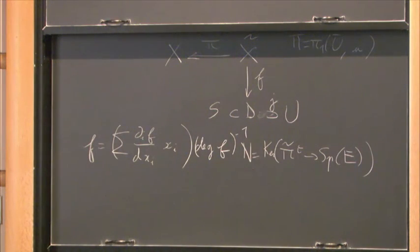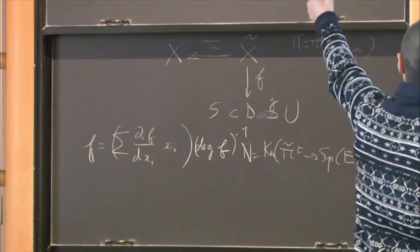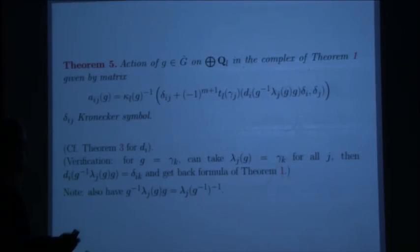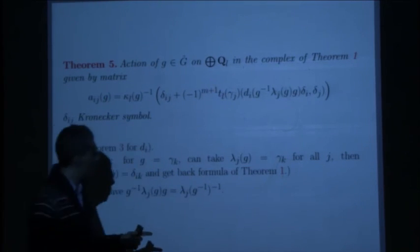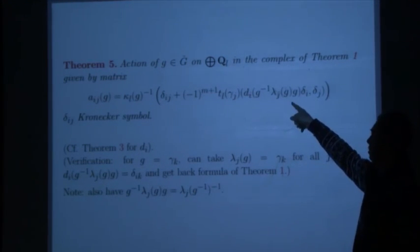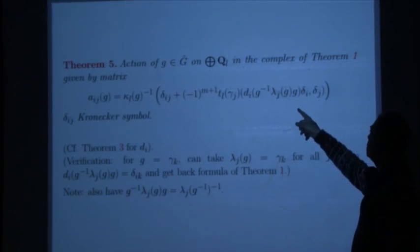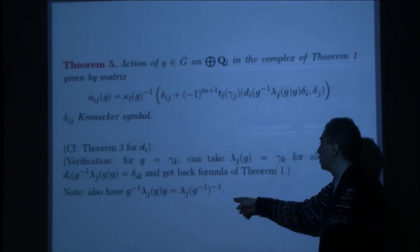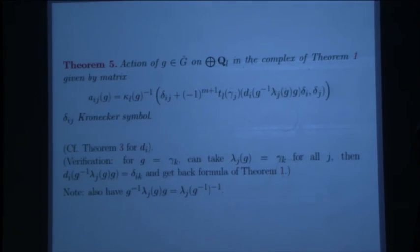Here's the formula for the action of an element of G-tilde on the central term of this complex. It's given by a matrix: one entry involves the cyclotomic character, there are Kronecker delta symbols, and another entry involves the Fox derivative of something involving lambda_j(g) and the intersection pairing. This element can also be written in another form, but that's all I can say. I cannot take any conclusion from this formula, so I better stop here.